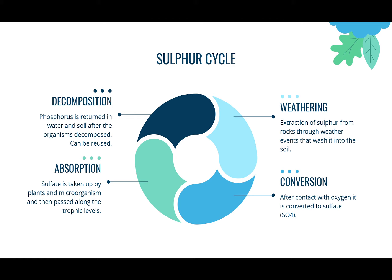The sulfur cycle also begins with weathering: the extraction of sulfur from rocks through weather events that wash it into the soil. Then there is conversion — an additional step compared to the phosphorus cycle — where after contact with oxygen, sulfur is converted into sulfate so it can enter more molecular bindings and structures. Then absorption: sulfate is taken up by plants and microorganisms and passed along the trophic levels. Finally, decomposition: sulfur is returned to the water and soil after organisms decompose and can be reused.